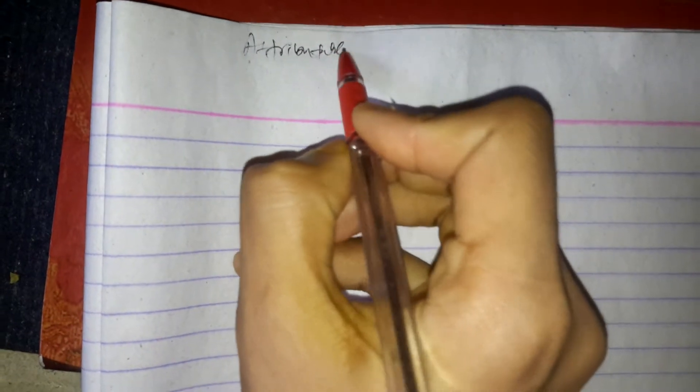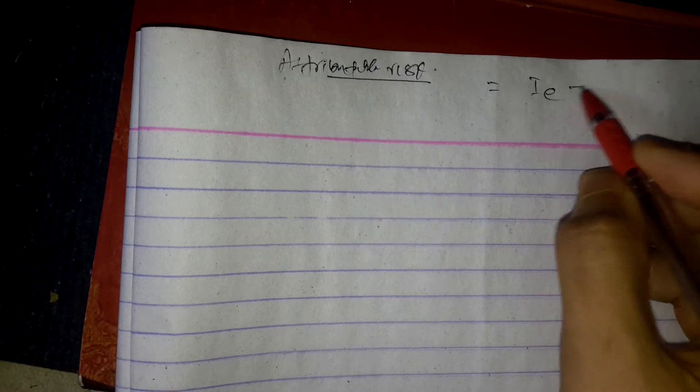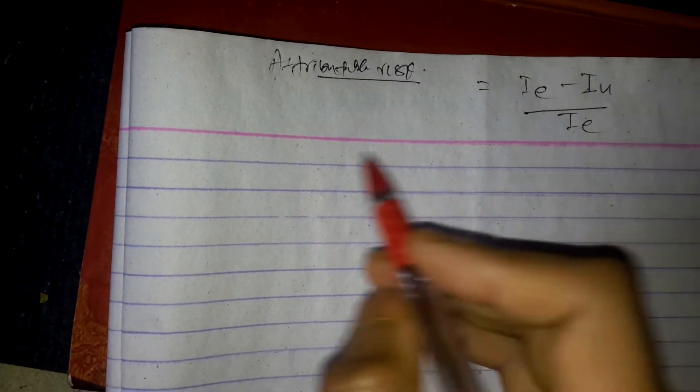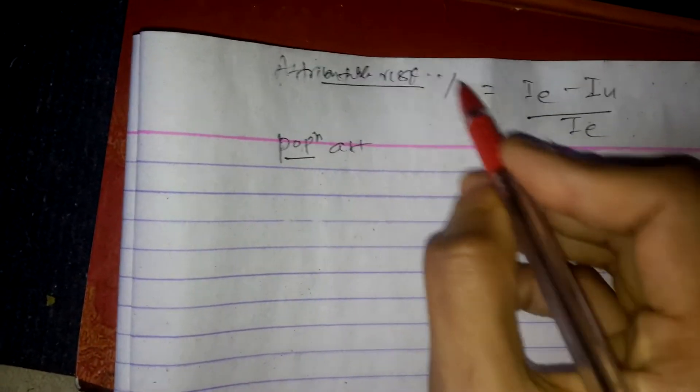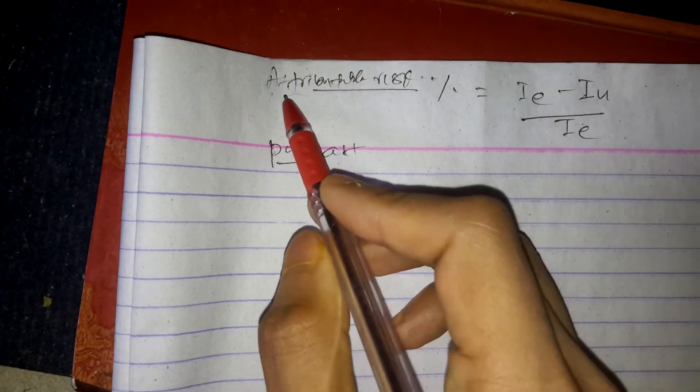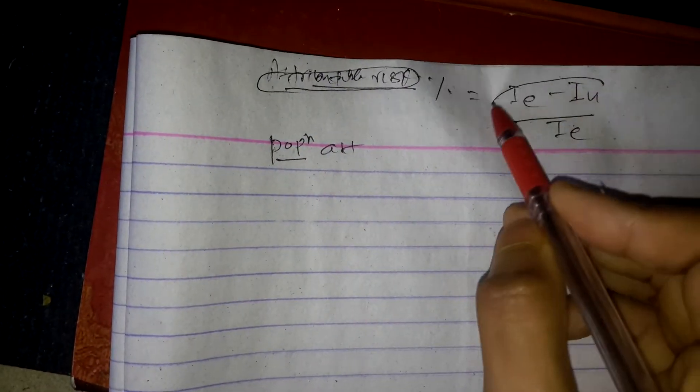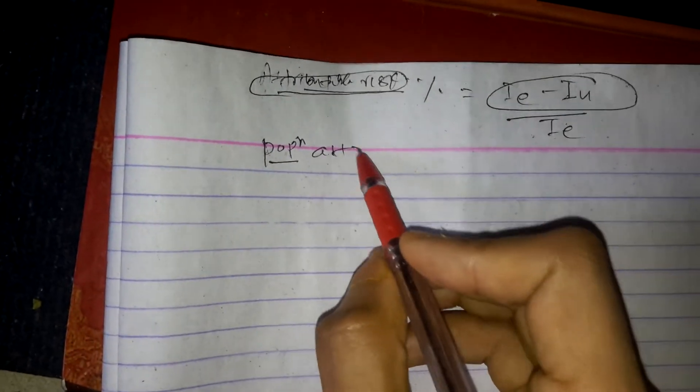We are going to discuss attributable risk and population attributable risk. The formula for attributable risk is: incidence in exposed minus incidence in unexposed, divided by incidence in unexposed. For attributable risk percentage, this is the formula multiplied by 100 to get a percentage.